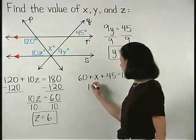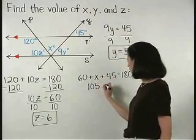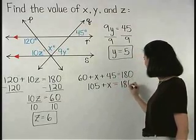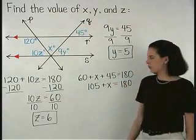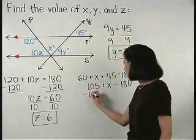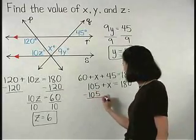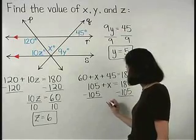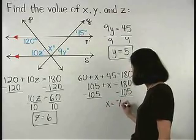Simplifying on the left gives us 105 plus x equals 180. And subtracting 105 from both sides, we find that x equals 75.